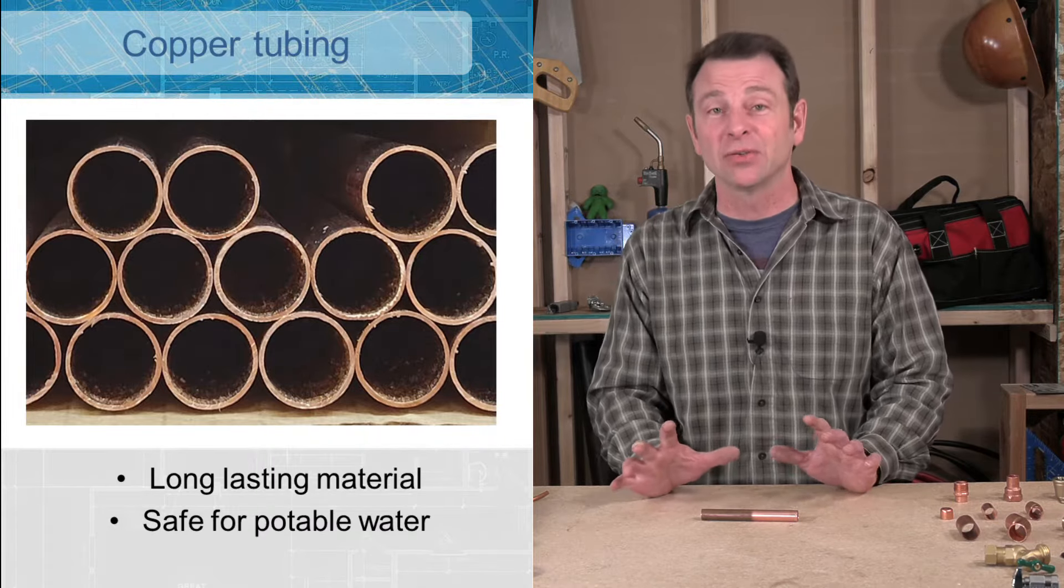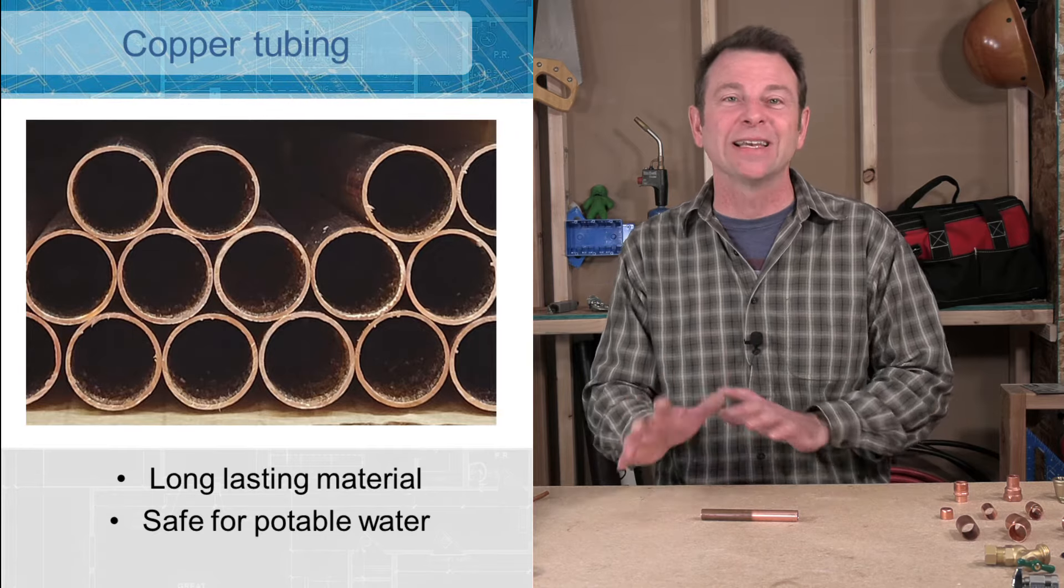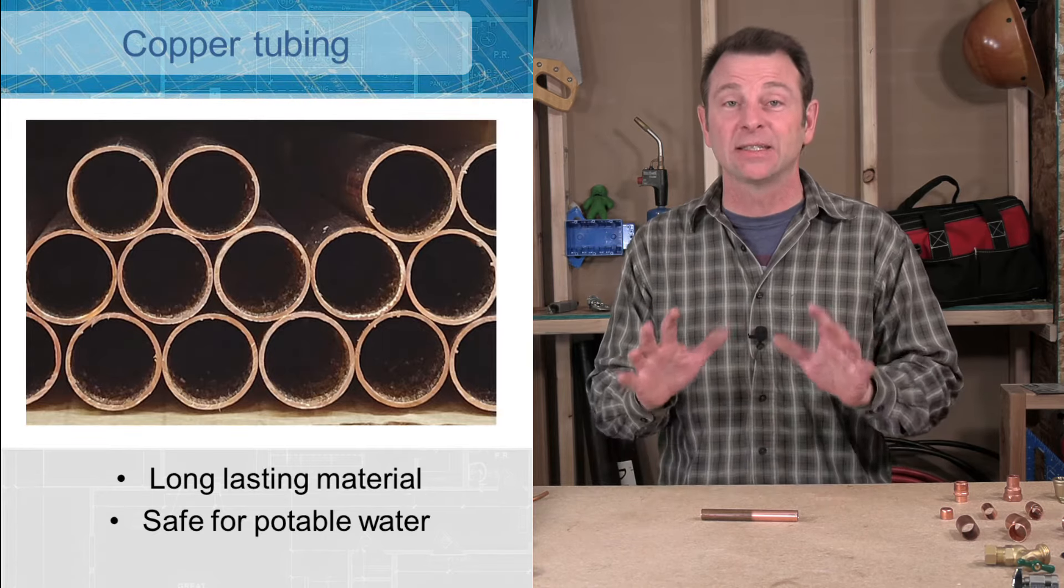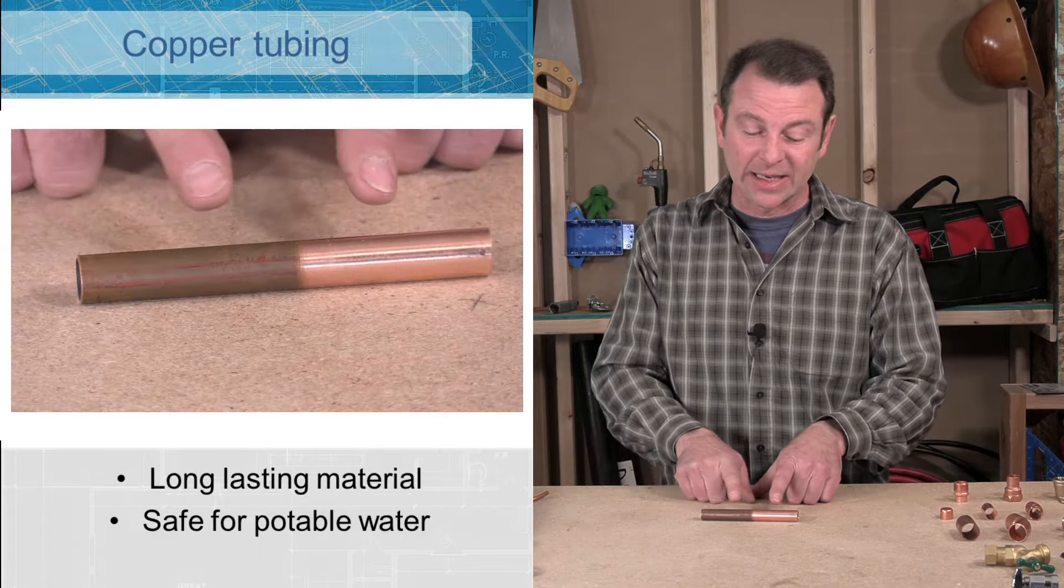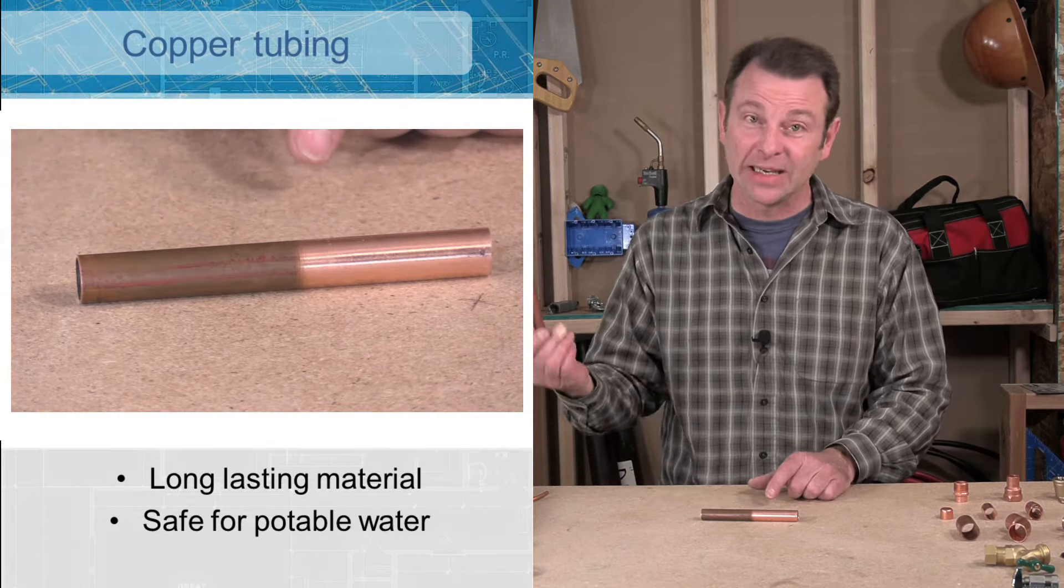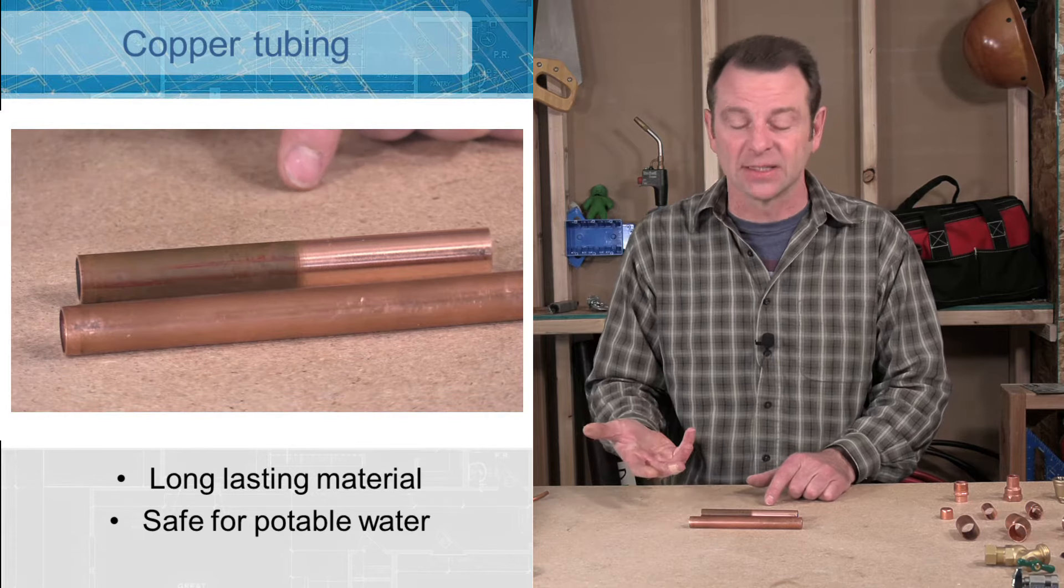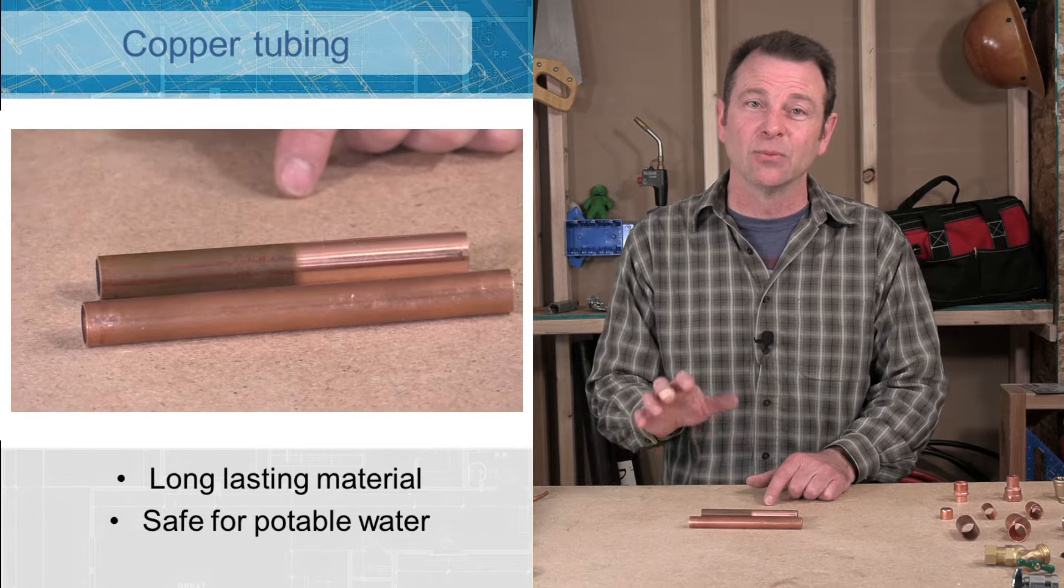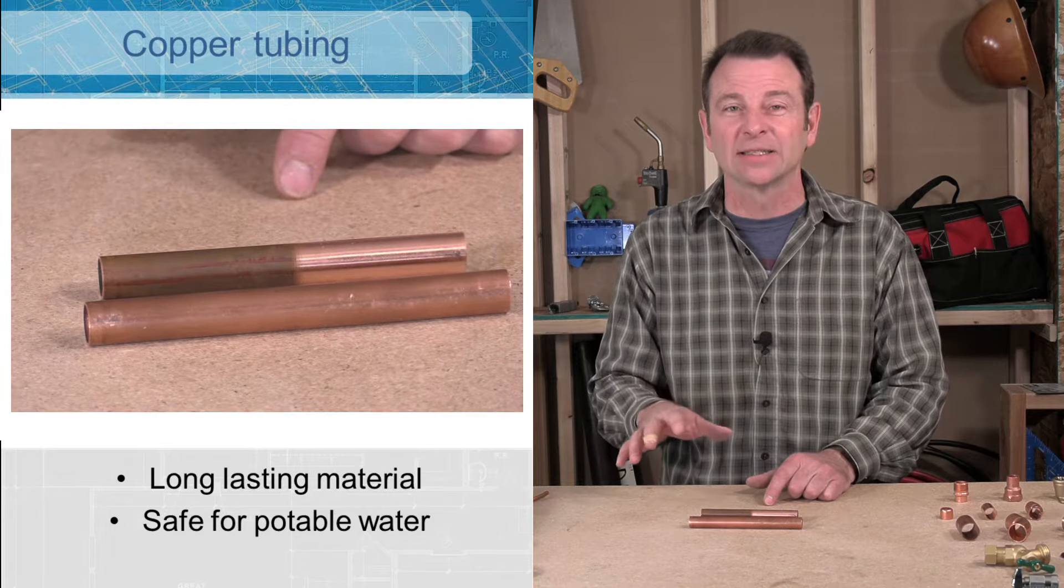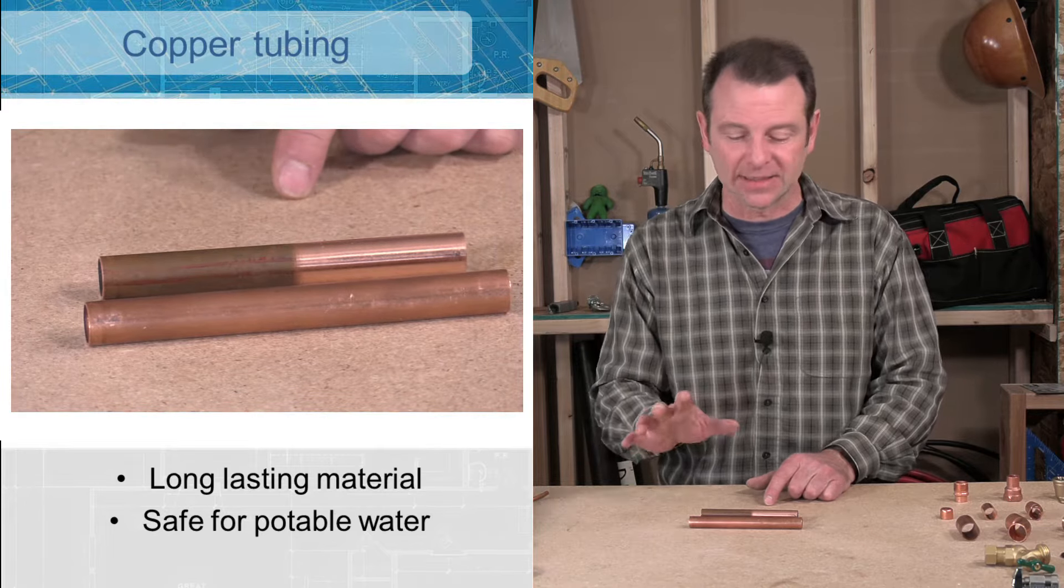So copper is a very traditional material for plumbing. You're seeing it less and less all the time. Still available and still widely used by plumbers. Once again you can identify it by different colors. Here is a sample of copper off the shelf. This is a sort of a very minimally weathered copper. It's kind of flashed. Copper oxidizes. It doesn't rust.